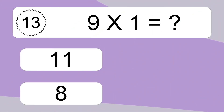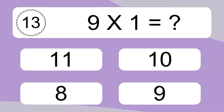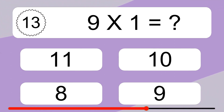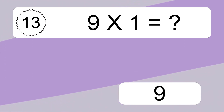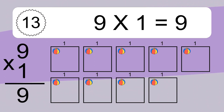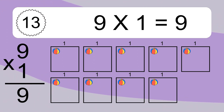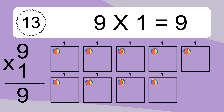9 times 1 equals what? 9 times 1 equals 9. We have 9 boxes, and each box has 1 colorful ball inside. If you count all the balls in all the boxes together, you will have 9 times 1 balls. This equals 9 balls.